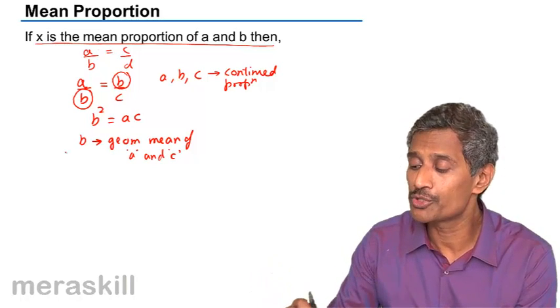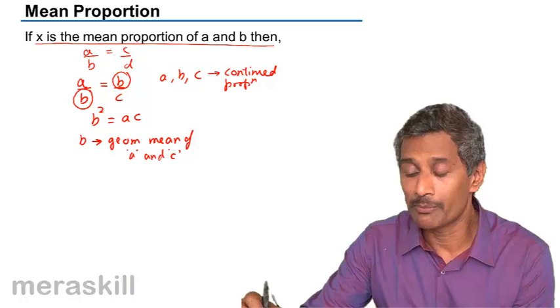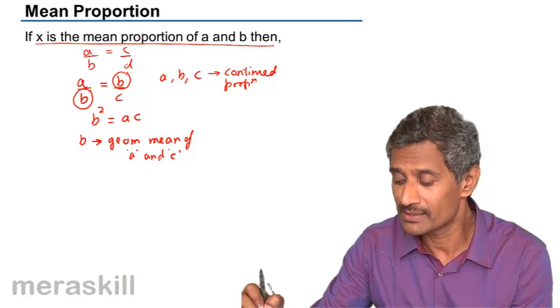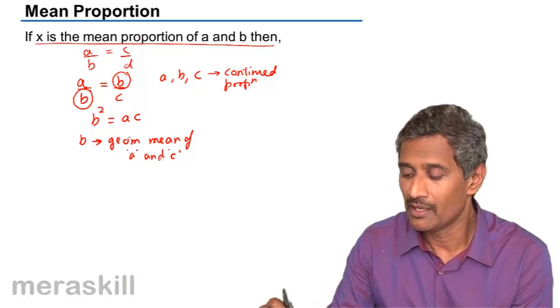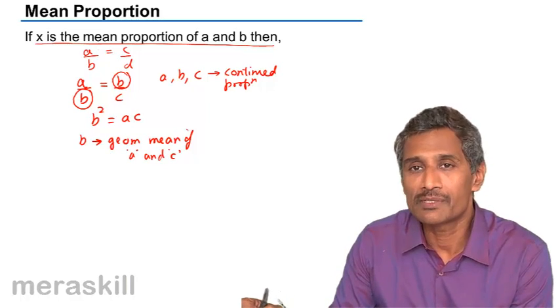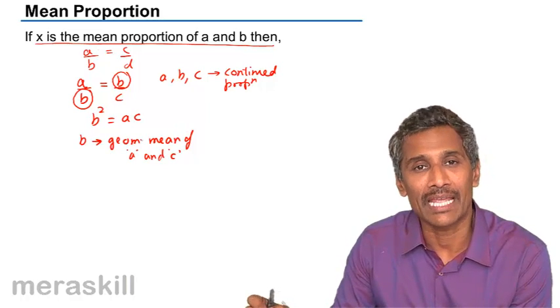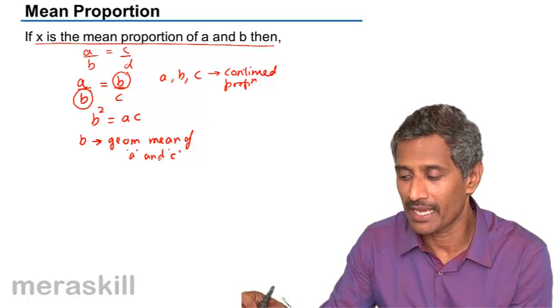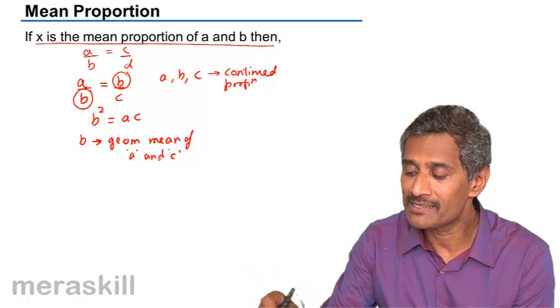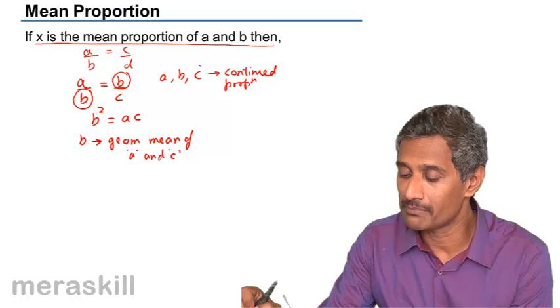X is the mean proportional of A and B. Now, mean proportional, mind you, is the same as geometric mean. If I say A is the geometric mean of, say, X and Y, it also means that A is the mean proportional of X and Y. So, if X is the mean proportional of A and B, then what does this mean?